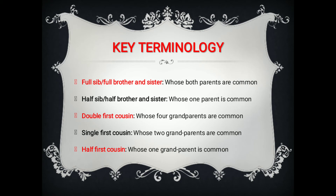Single first cousin refers to individuals whose two grandparents are in common. Half first cousin refers to individuals whose only one grandparent is common.